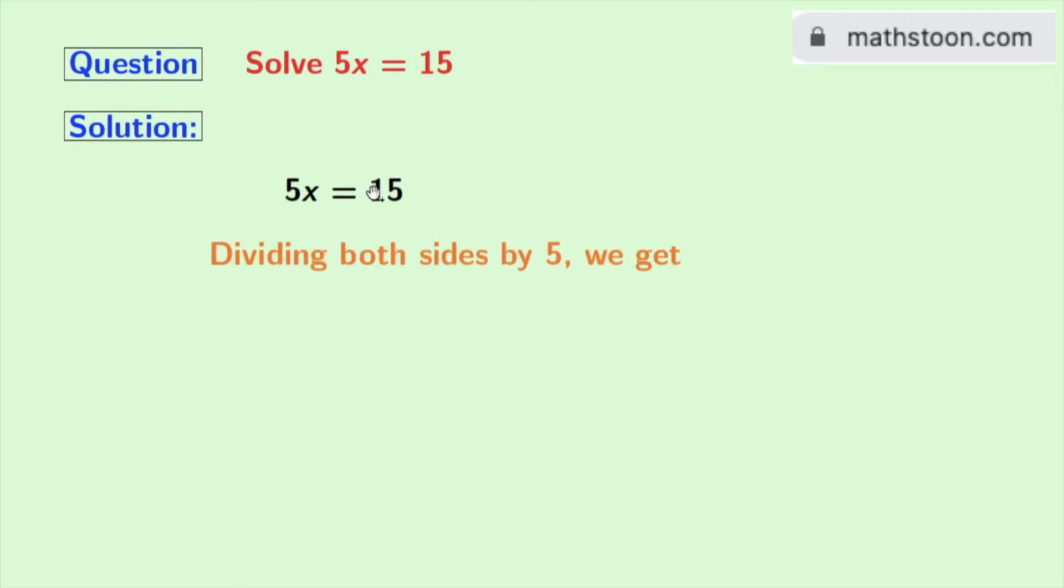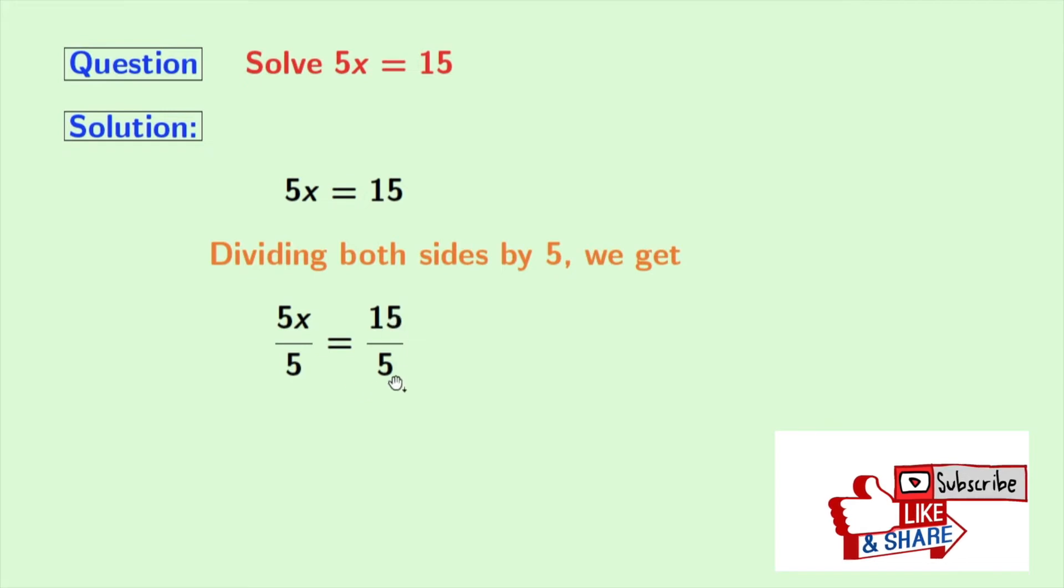Doing so, we get 5x by 5 is equal to 15 by 5. Now look that in the left-hand side, 5 gets cancelled and we are left with x.